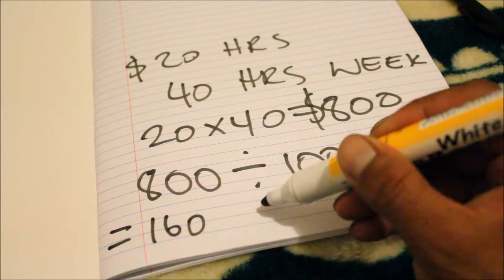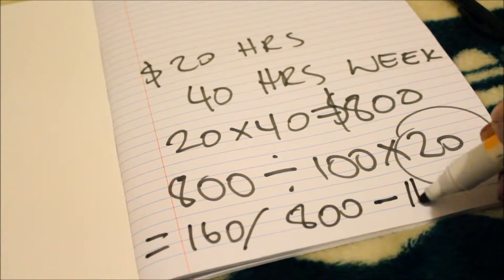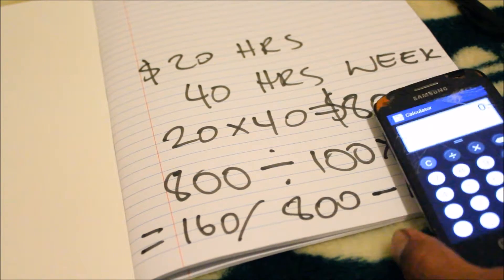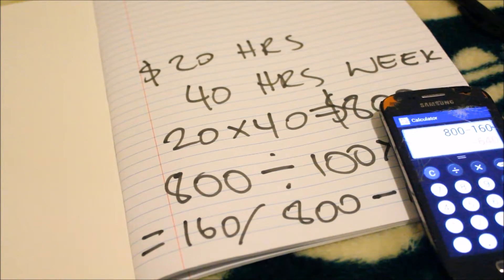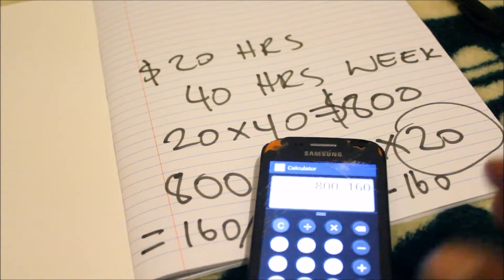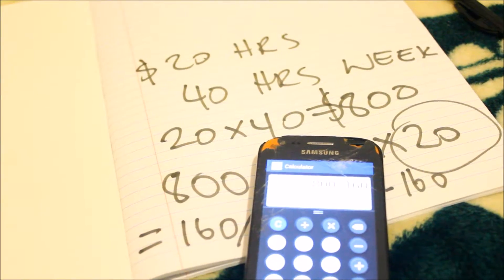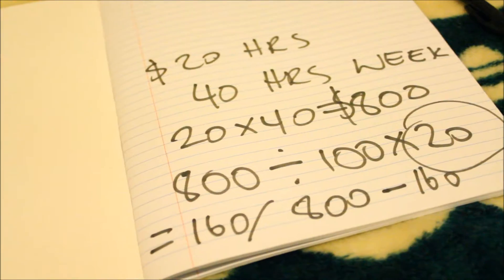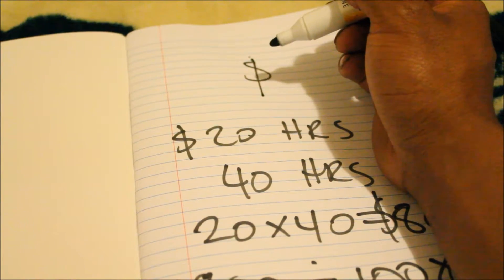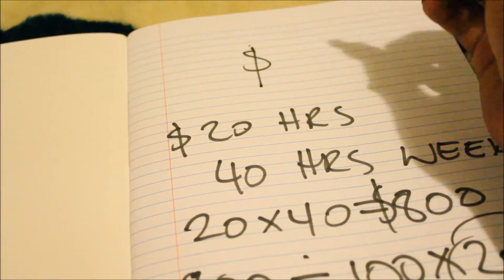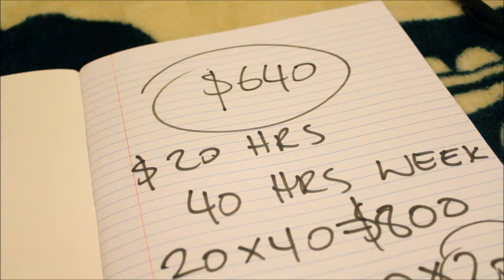Once you get that answer of 160, then you have to go 800 minus 160. Let's get the calculator: 800 minus 160 equals 640. So what you're getting after tax per week is $640.